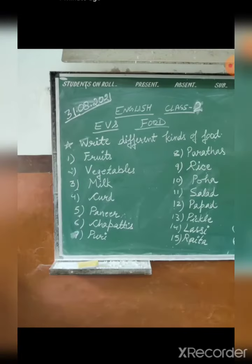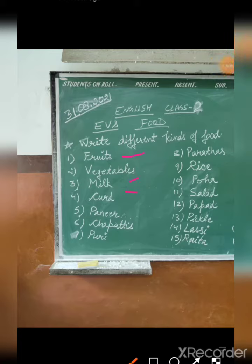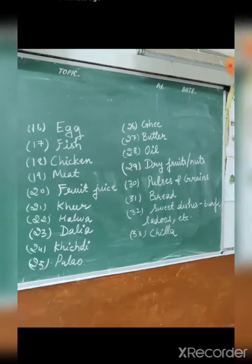Here are some of the food items: fruits, vegetables, milk, curd, paneer, chapatis, puri, parathas, rice, poha, salad, pepper, pickle, lassi, raita, and many more. Also egg, fish, chicken, meat, kheer, halwa, daliya, khichuri, pulao, ghee, butter, oil, dry foods and nuts, pulses and grains, bread, sweet dishes, and chillas. All these are the food items that we take on a regular basis.